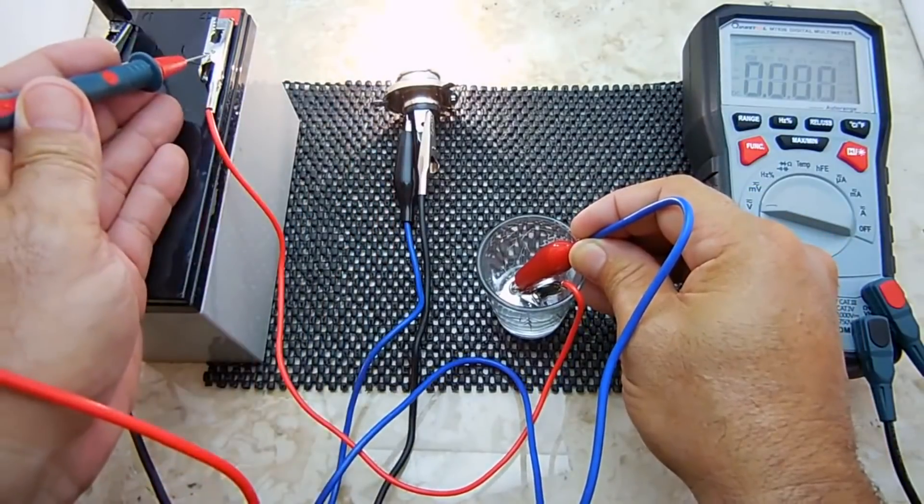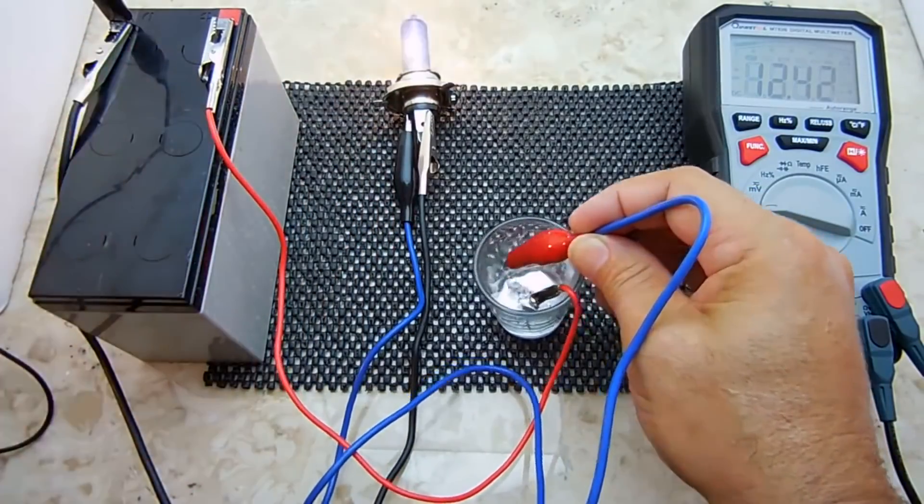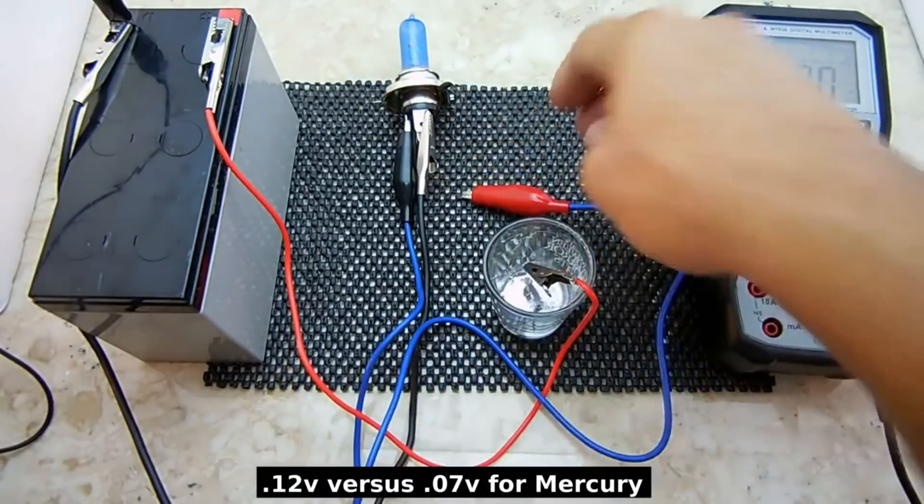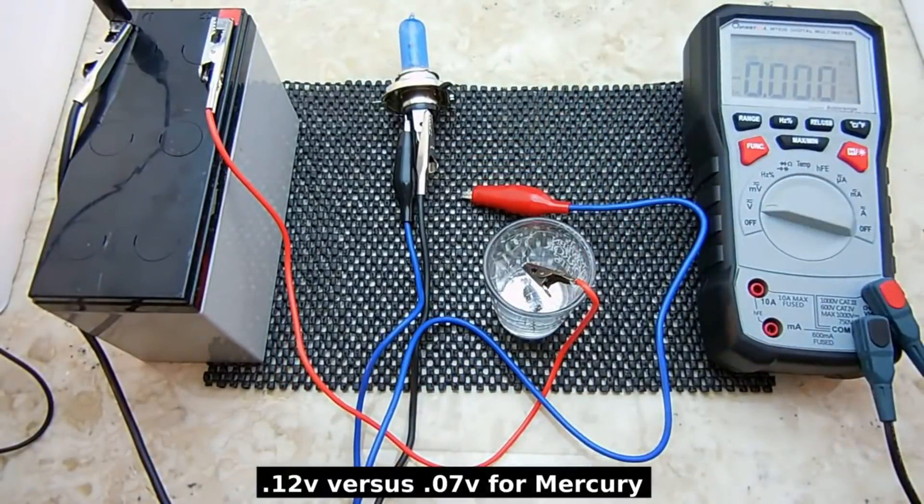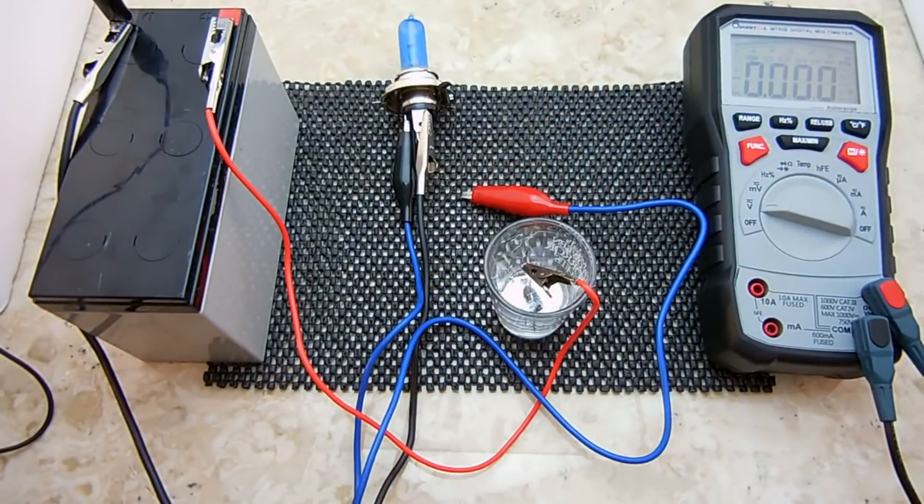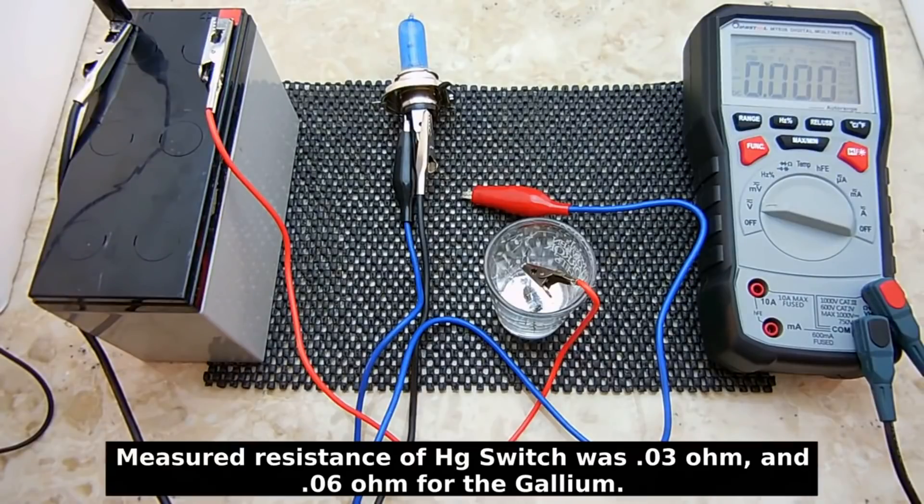That's 12.30 and over here is 12.42. So there is a little bit more of a voltage drop, which demonstrates that the mercury has a lower level of resistance and it's more conductive. But the gallium can also be used if the load was not too heavy.